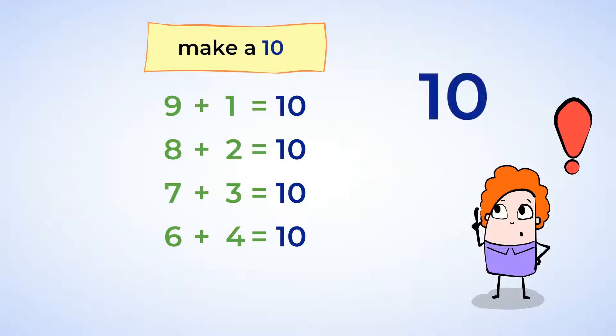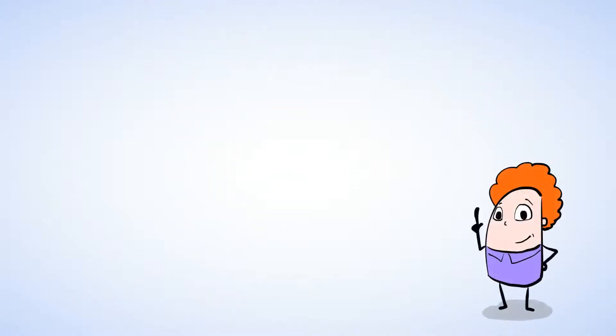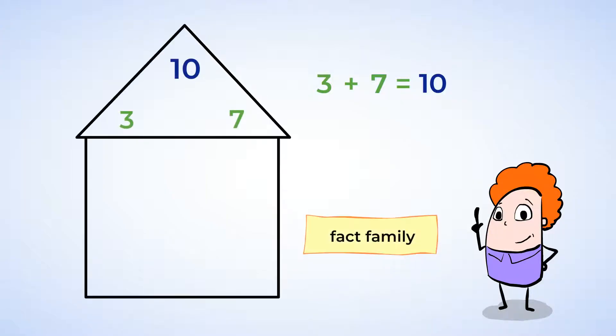And if you want to find him, you should memorize all the ways to make a 10. It can also help you with subtraction from 10. For example, if you know that 3 plus 7 equals 10, that means that 3, 7, and 10 make a fact family. So you can also know that 10 minus 3 equals 7, and 10 minus 7 equals 3.